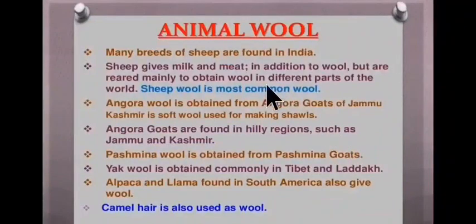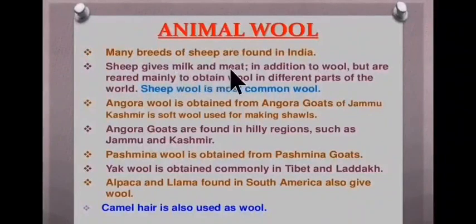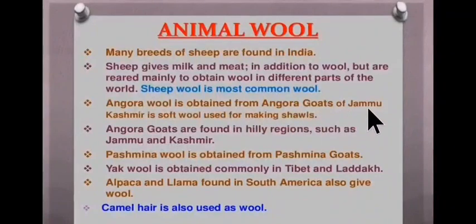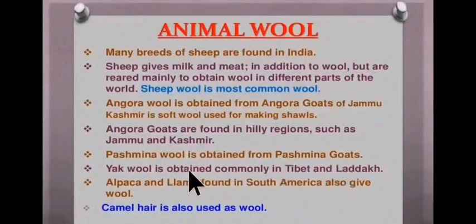Many breeds of sheep are found in India. Sheep also give milk and meat in addition to wool, but they are mainly reared to obtain wool in different parts of the world. Sheep wool is the most common wool. Angora wool is obtained from angora goats of Jammu and Kashmir — a soft wool used for making shawls. Pashmina wool is obtained from pashmina goats. Yak wool is obtained commonly in Tibet and Ladakh. Alpaca and llama found in South America also give wool. Camel hair is also used as wool.